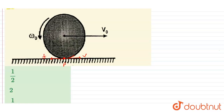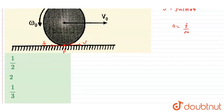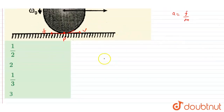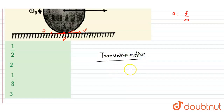The force applicable here is friction f. The translational acceleration is f/m, where f is the friction force acting between the two bodies. We can now write the equation of motion for translational motion.